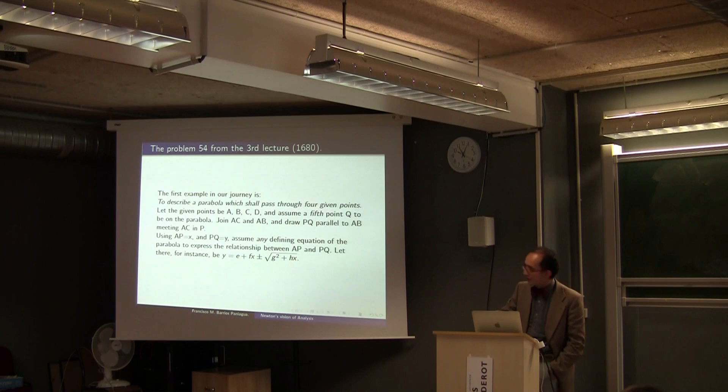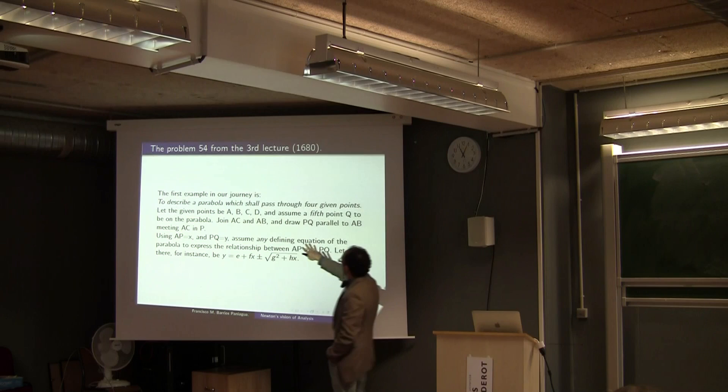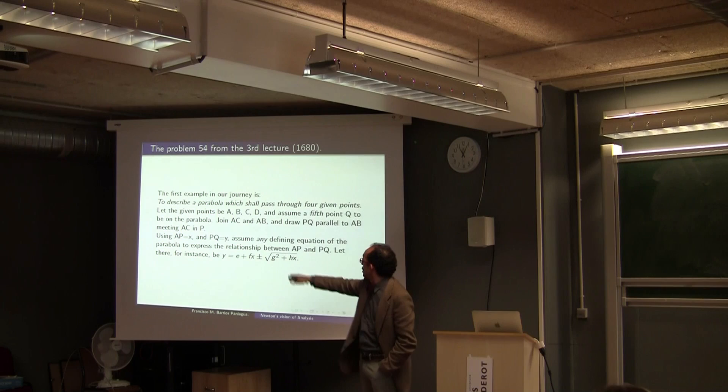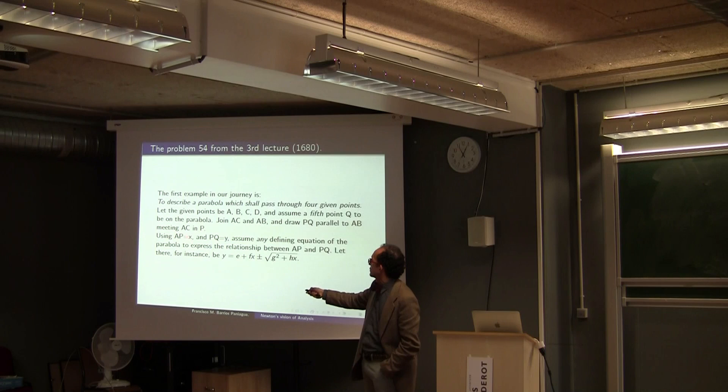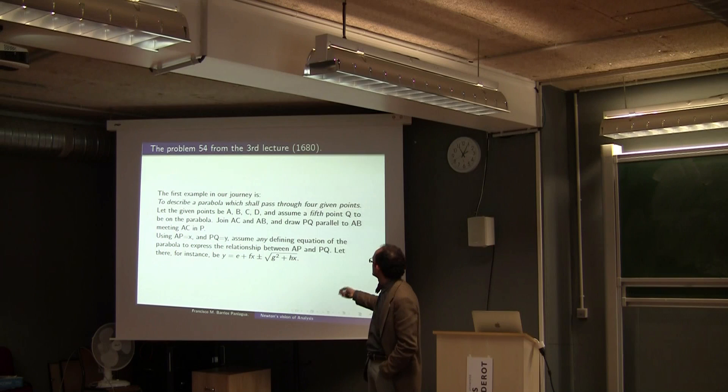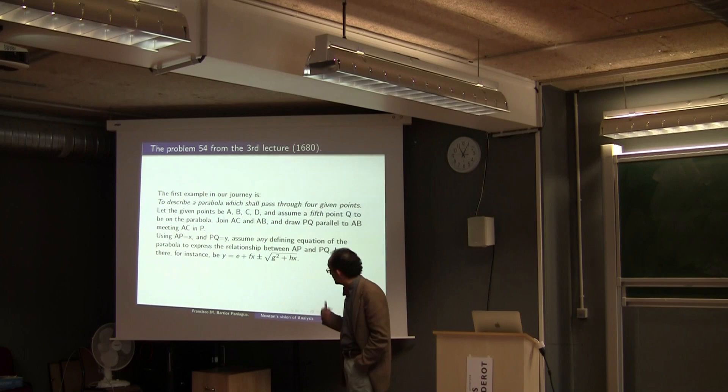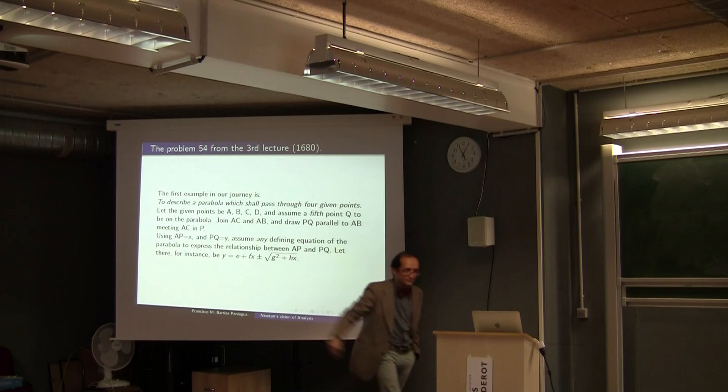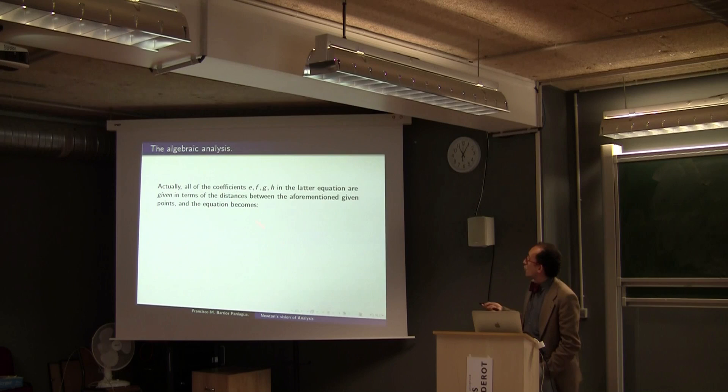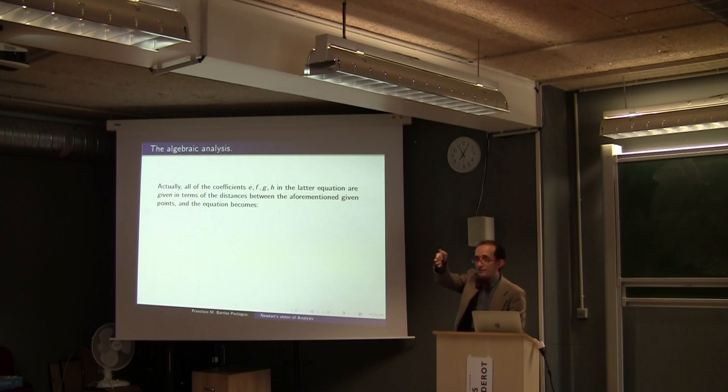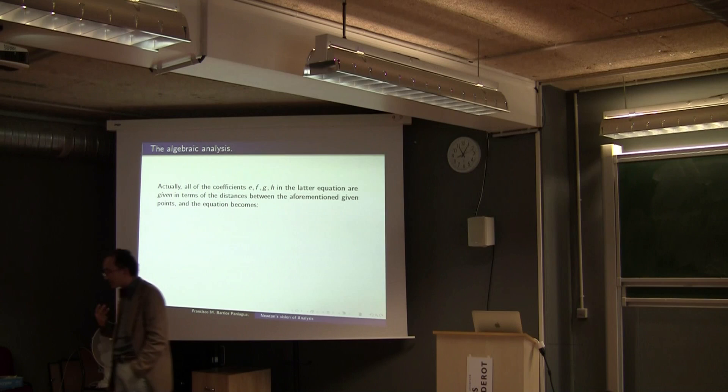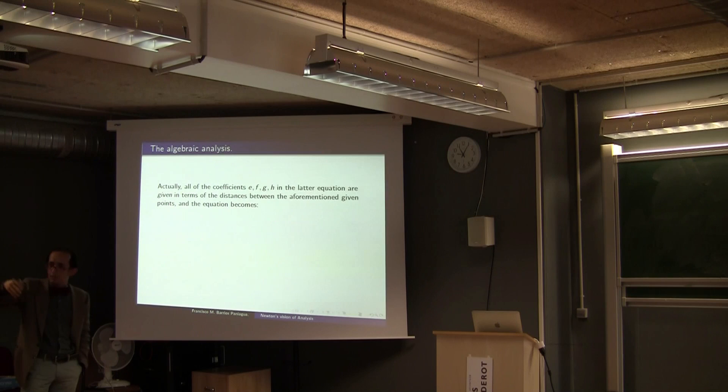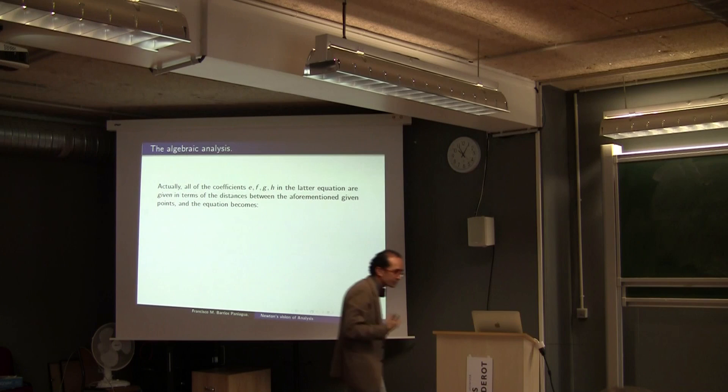So, in this journey, the first example is to describe a parabola which shall pass through four given points. As we all know, a conic is given once we have five points given in general position. So, here Newton is saying, I am going to give you four points, but I am giving you the symptom, the species of a conic, in this case a parabola. So, I am not going into the details. I know that we are not all in this room, so I am going to give a very general overview of this. If you want, we can discuss the details later.